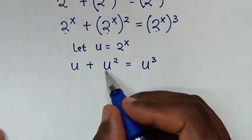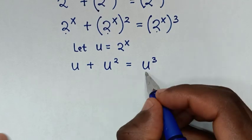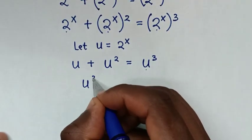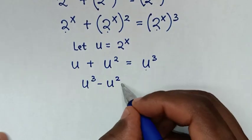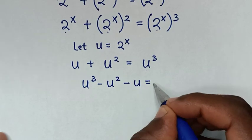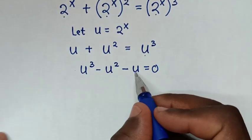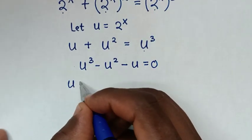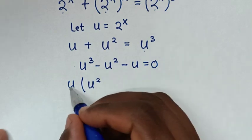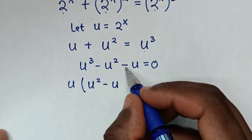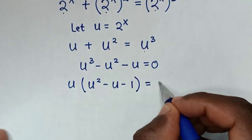In the next step we move all terms to one side: u cubed minus u squared minus u equals 0. Then u is common, so we factor out u to get u times bracket u squared minus u minus 1, bracket equals 0.